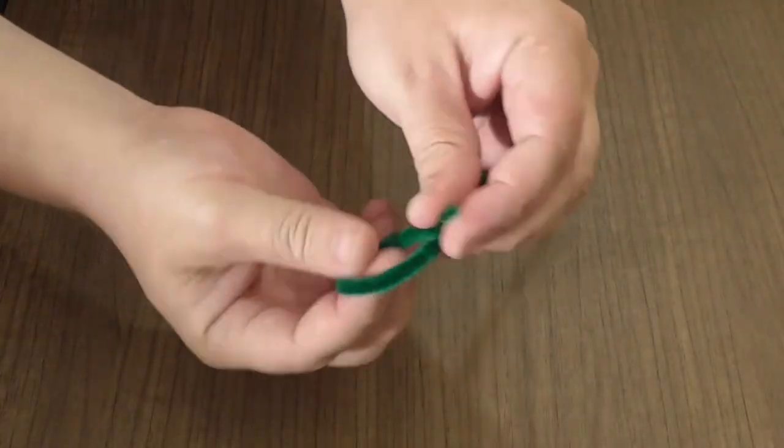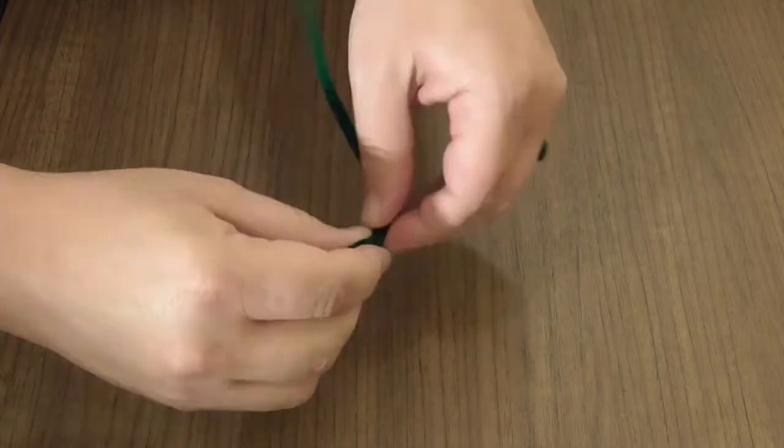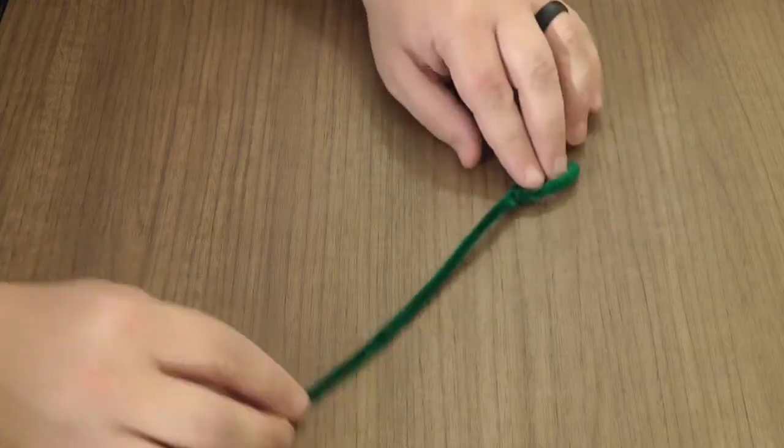Start by taking one of your pipe cleaners and wrap one end into an oval or roundish shape. This is the head of your chameleon.